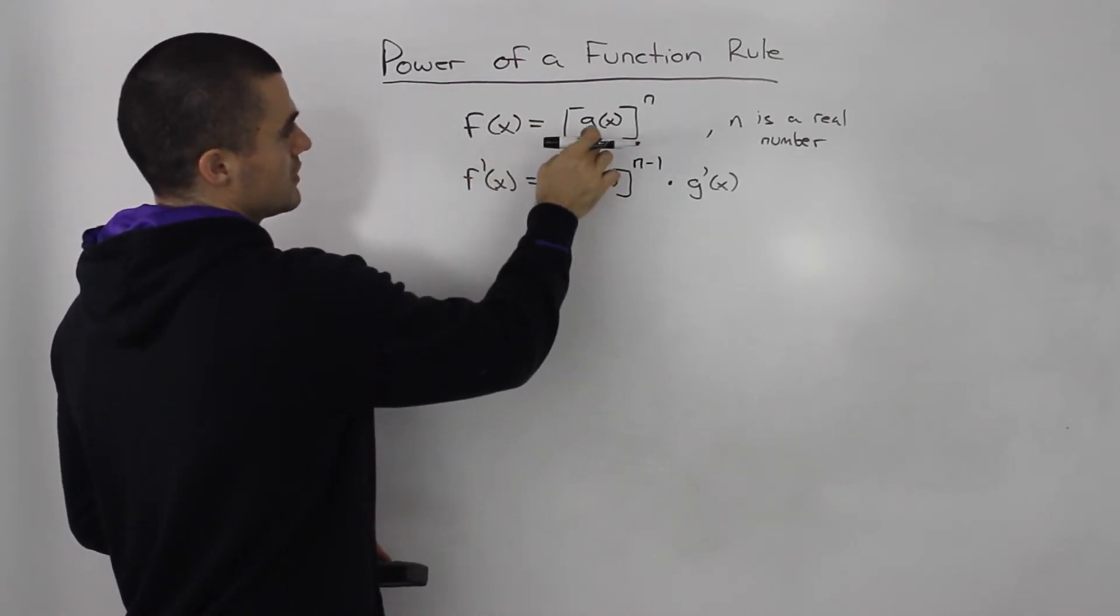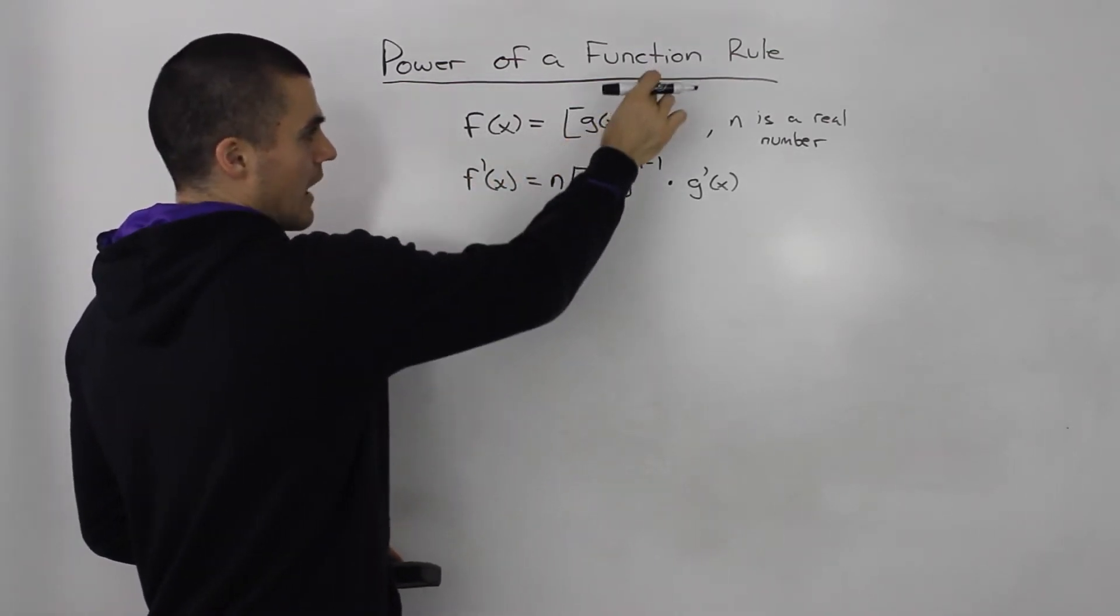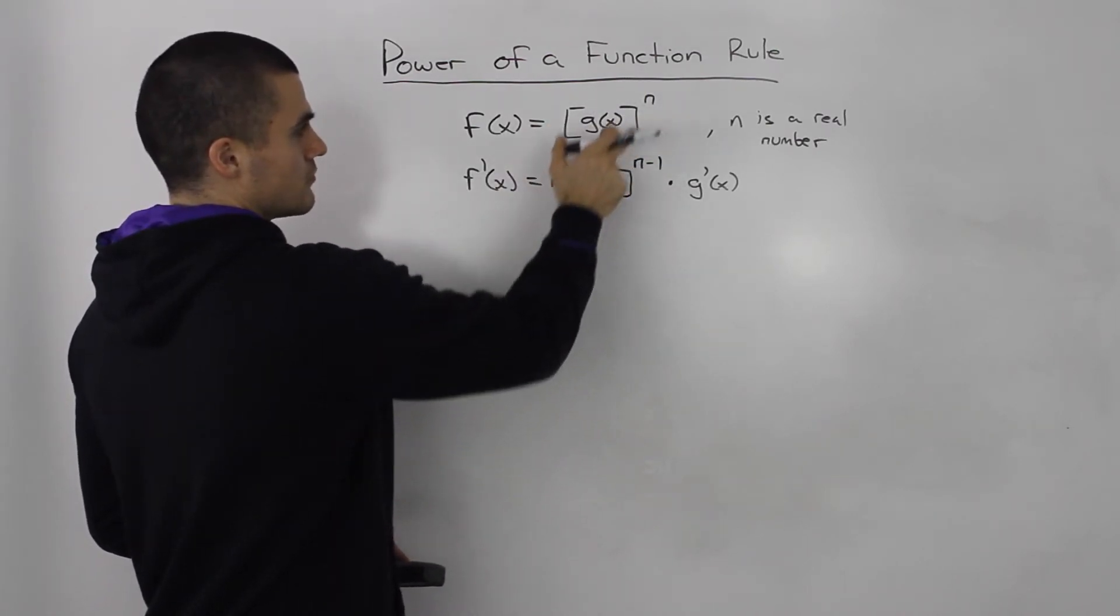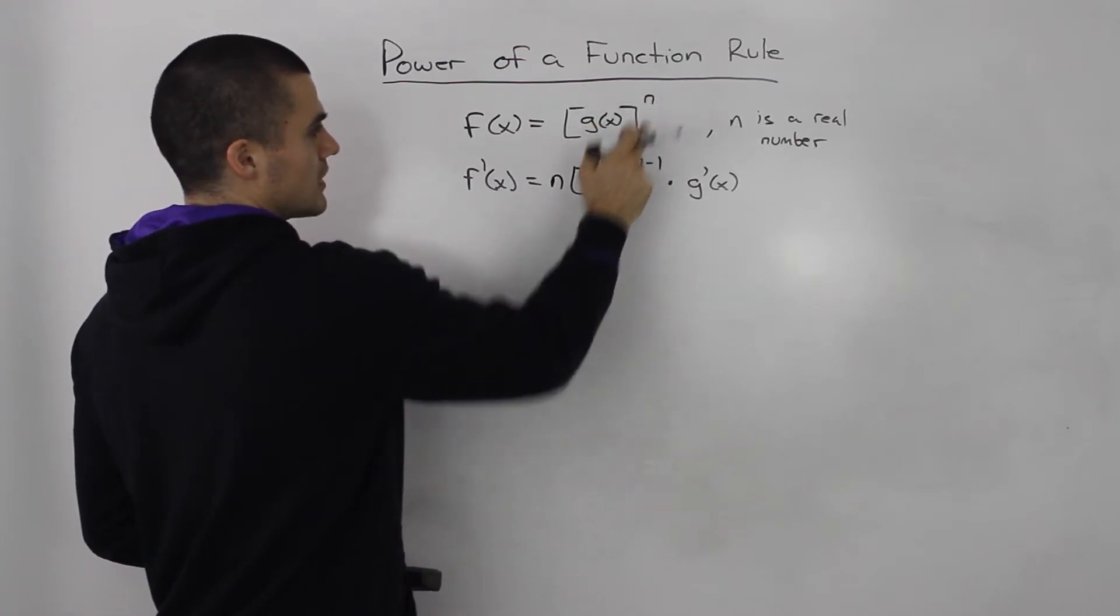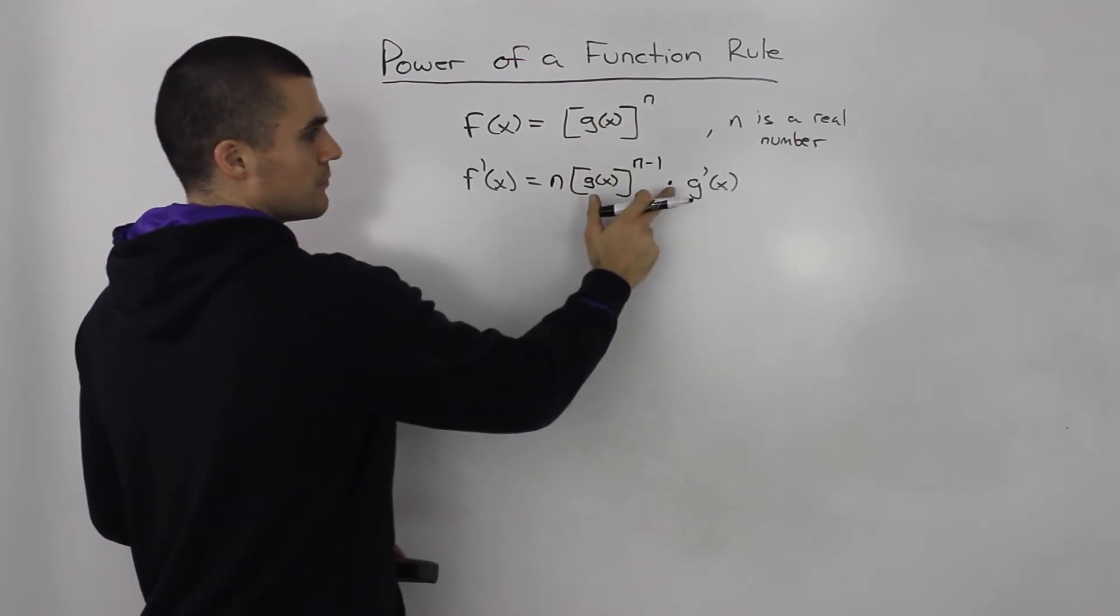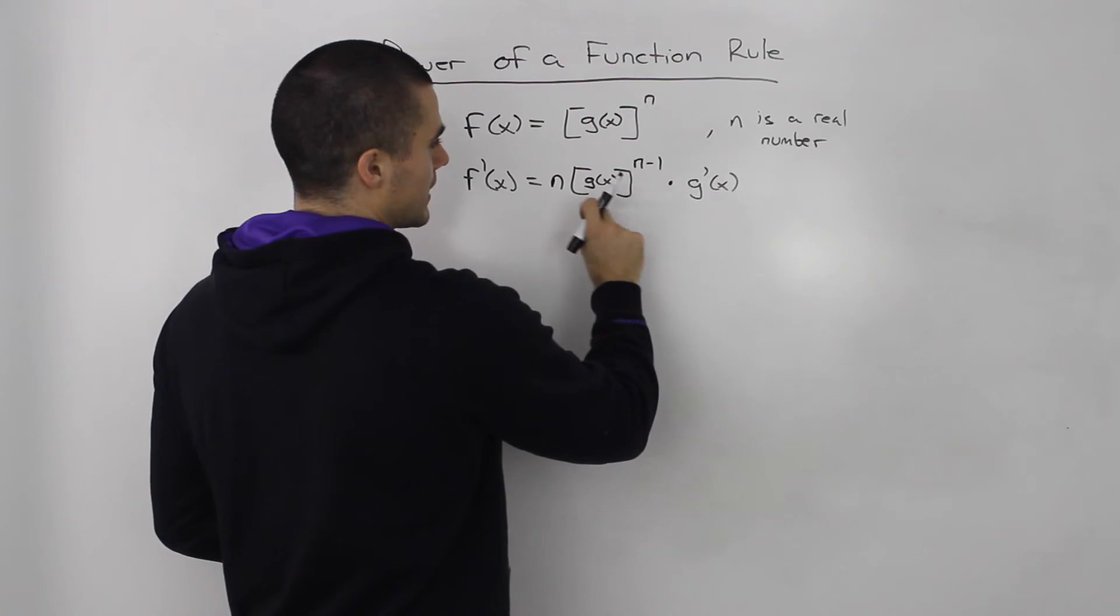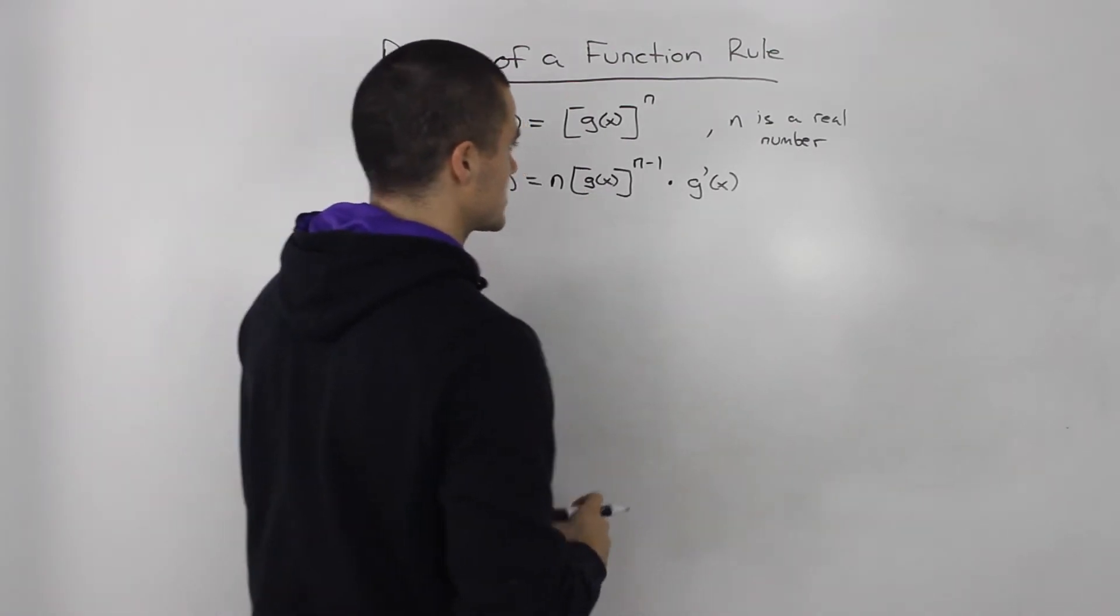So if you have a function in terms of a function to the power of n, the derivative of it: apply the power rule, bring the n down, minus 1 from the exponent, but then multiply it by the derivative of the function inside.